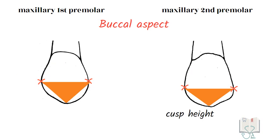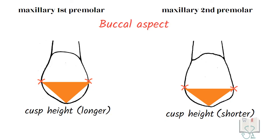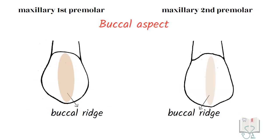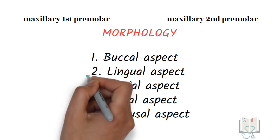The contact areas in the second premolar are more occlusally positioned than in the first premolar. This more occlusal placement makes the cusp height of the second premolar appear shorter than that of the first premolar, which results in the cusp tip of the first premolar appearing sharper than the second premolar. In both premolars, a buccal ridge running from the cusp tip to the cervical line is seen, but it is less prominent in the second premolar.